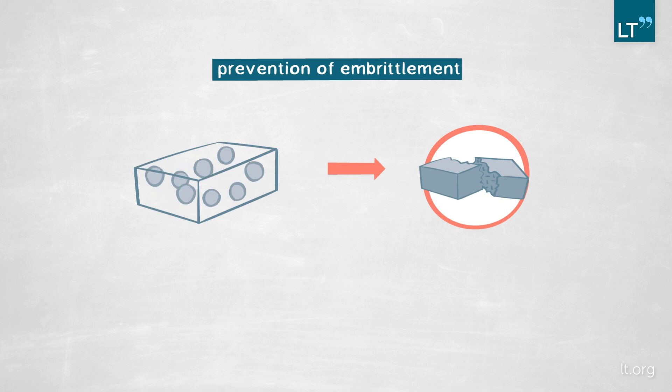But what we've shown is that by putting some of these particles inside of the steel, these particles can trap the hydrogen, locating it in a specific phase, preventing it from going around and causing mayhem.